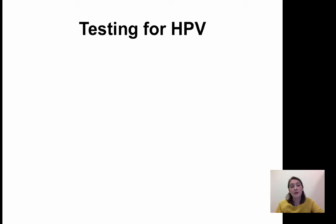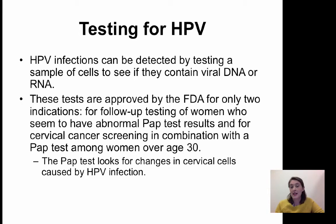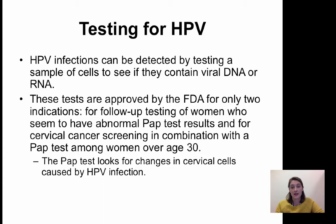How can you test for HPV? It can be tested by taking a sample of cells and seeing if they contain either viral DNA from the virus or the presence of RNA transcribed during viral replication. There are tests approved by the FDA for two indications: first, as follow-up testing for women who have an abnormal pap test. A pap smear takes cervical cells and examines them under a microscope to see if there is any abnormal cell growth or early signs of cervical cell transformation or cancer development.